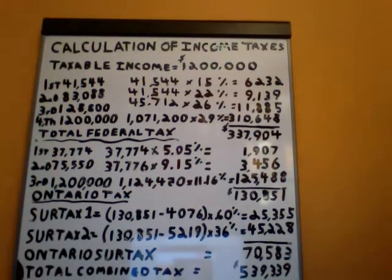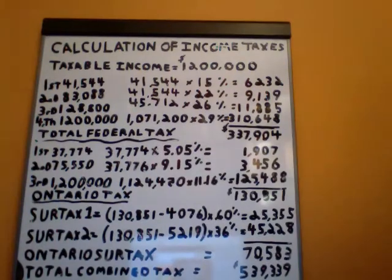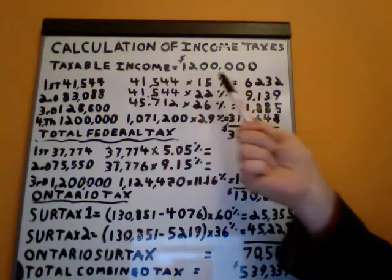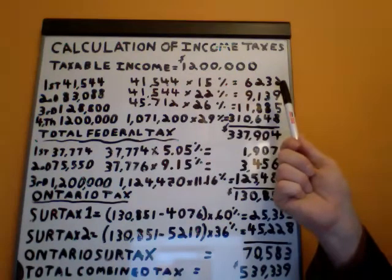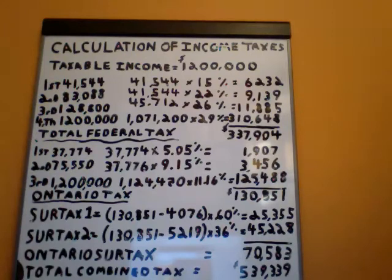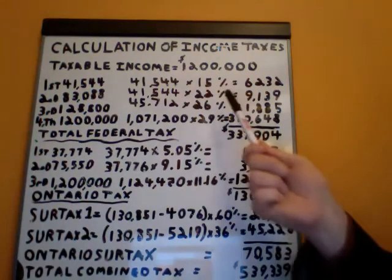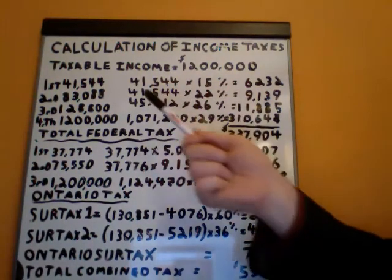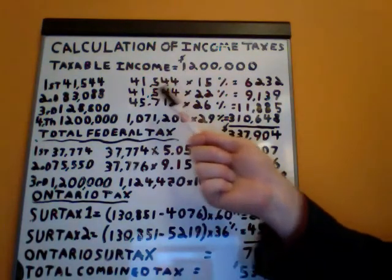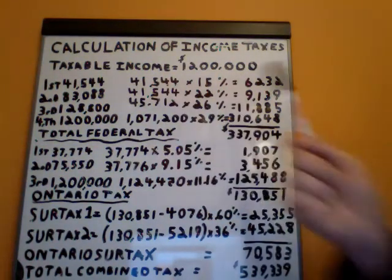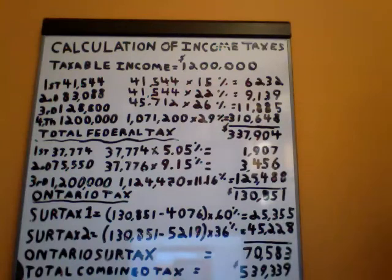Now we have to calculate the federal income taxes per bracket. The first bracket starts at $41,544 and the rate is 15%, so $41,544 times 15% gives you $6,232. The second tax bracket federally in Canada goes all the way up to $83,088 and that rate is 22%, so we multiply the difference, which is the same amount, $41,544 times 22%, giving you $9,139.